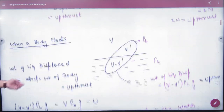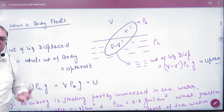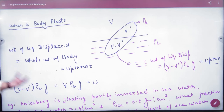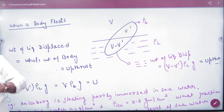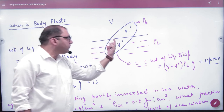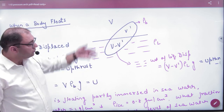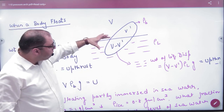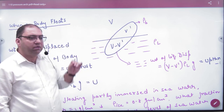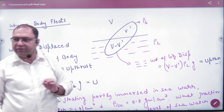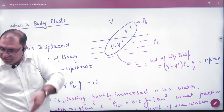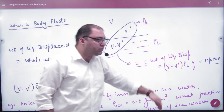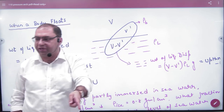The flotation principle is this: if you have any body that is floating, with some portion in the water and some portion out, then how much volume is submerged in the liquid? The answer is V minus V dash. If V minus V dash of the body is in the water, then how much volume of liquid will be displaced? V minus V dash.